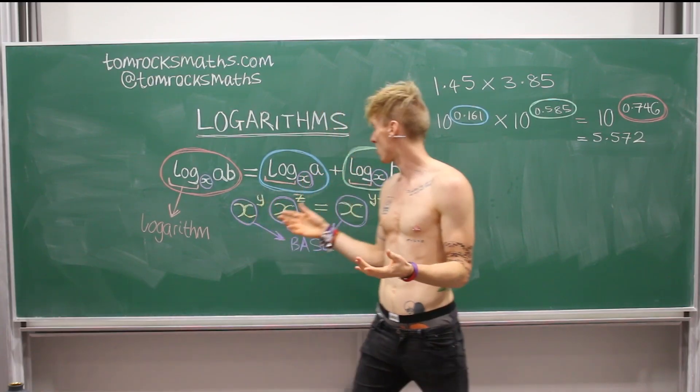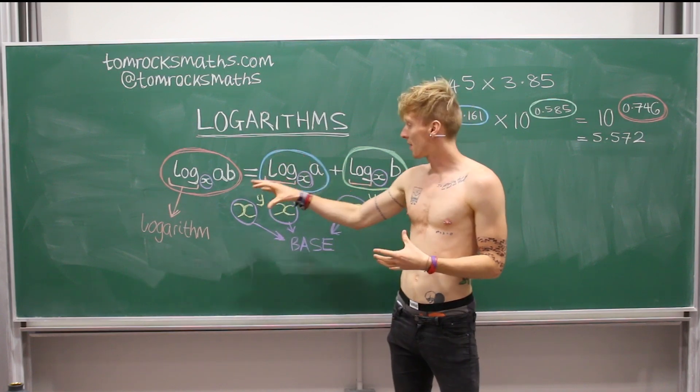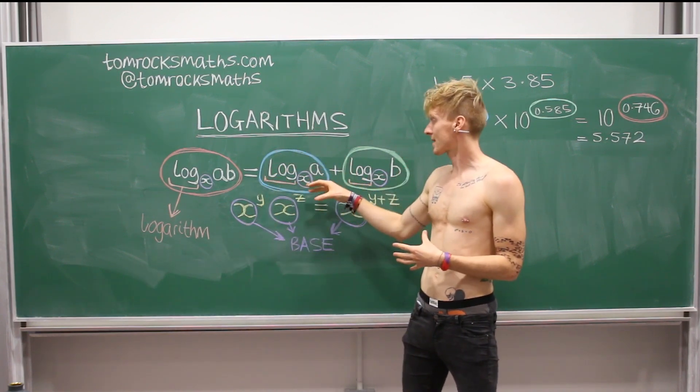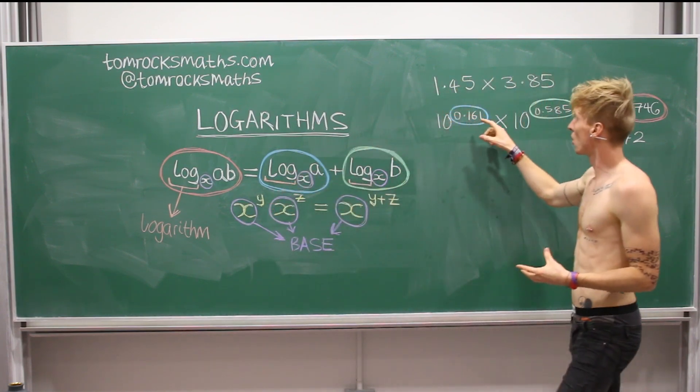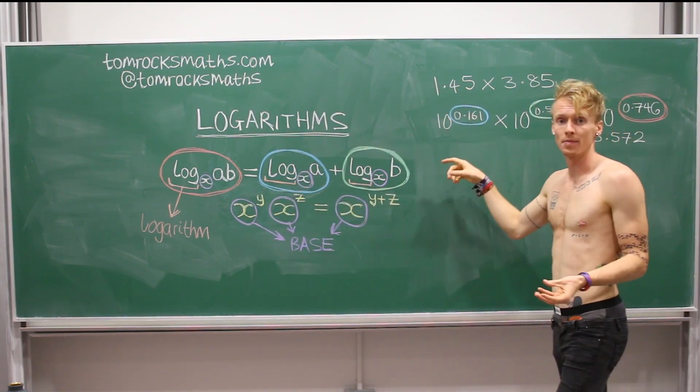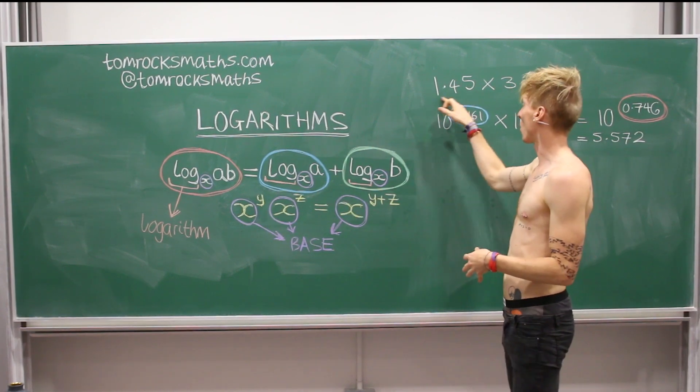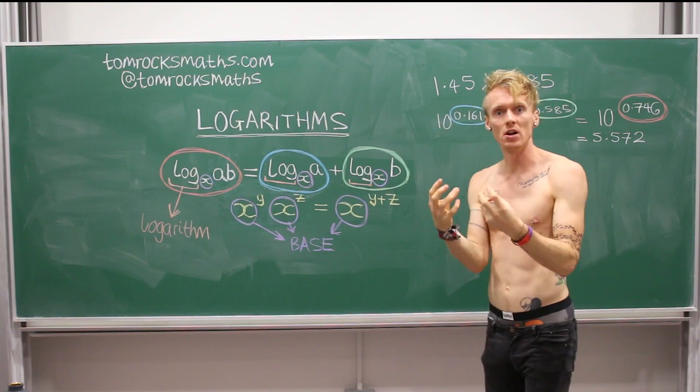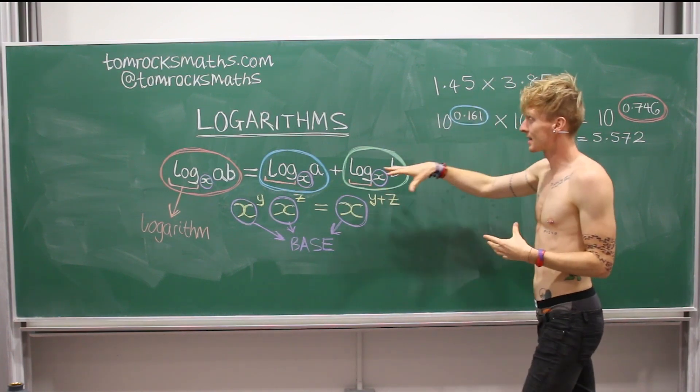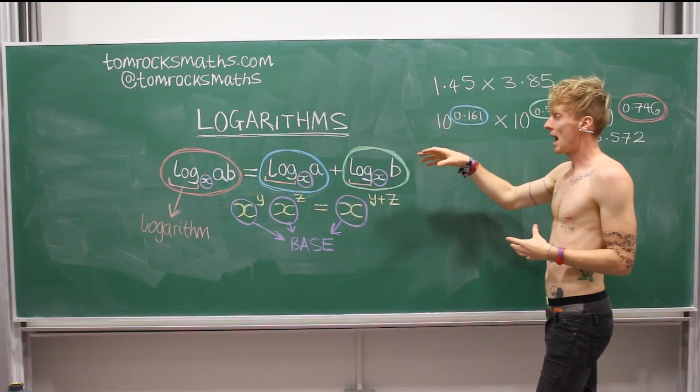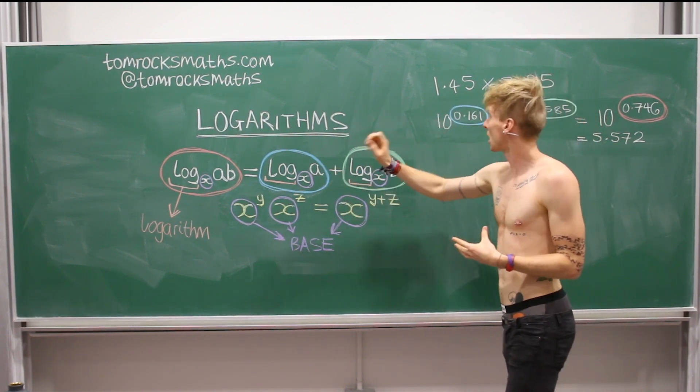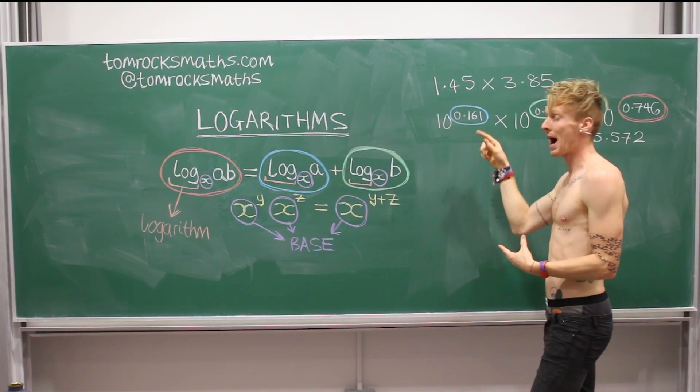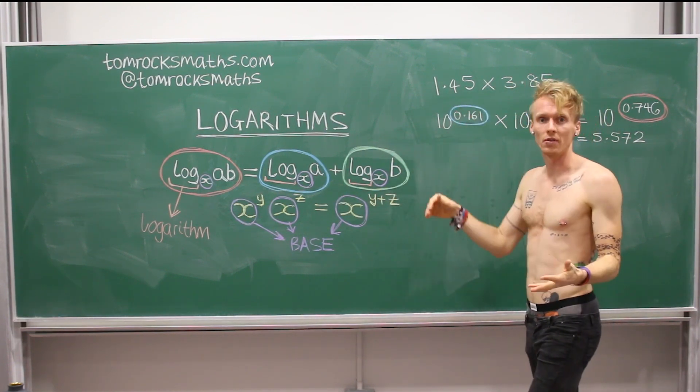Beginning on the right-hand side of our equation with the term in blue, this is telling us that the logarithm base x of A is equal to 0.161. So A here would be our 1.45. This is the number that we want to convert into base 10. And x here is 10. And then the logarithm of A, the logarithm of 1.45 in base 10, is the power 10 needs to be raised to to get 1.45.